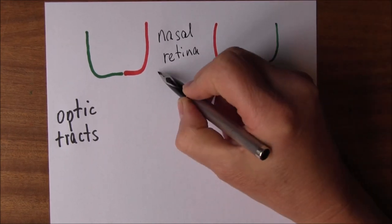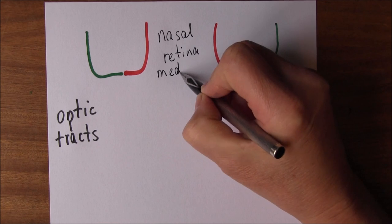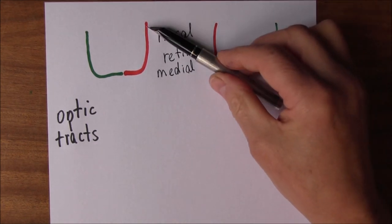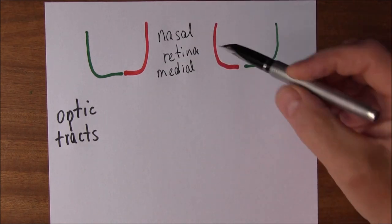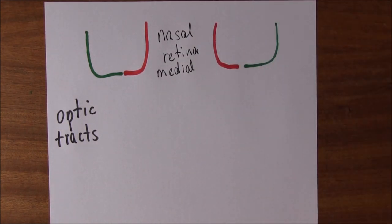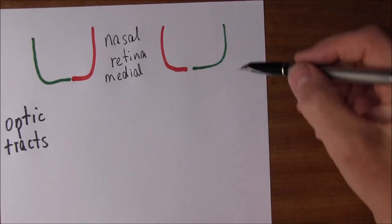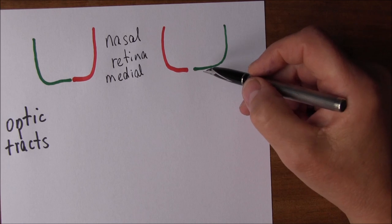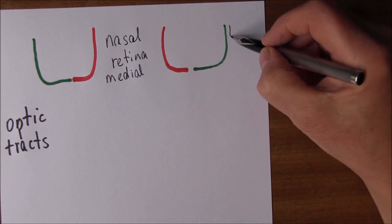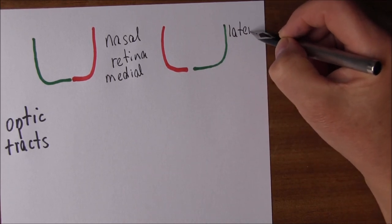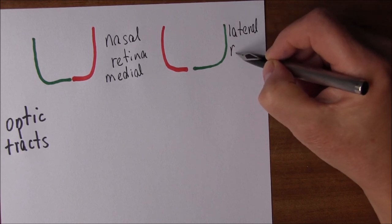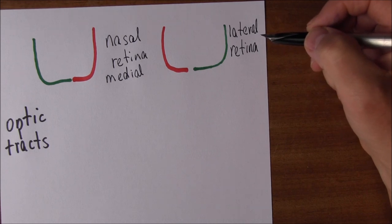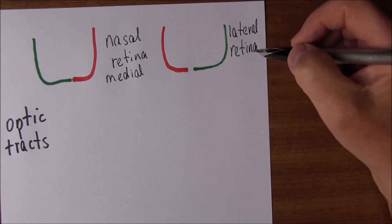In red, the nasal areas of the retina — the nose is going to be in the middle here — but we also have this side of the retina here that's on the outside, so that's lateral. The lateral retina is sometimes called the temporal or the peripheral retina as well.